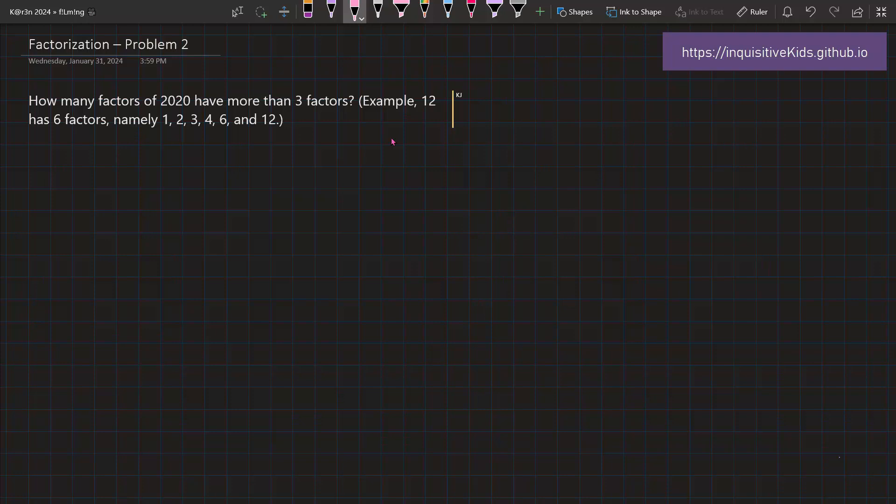For example, the number 12 has 6 factors, namely 1, 2, 3, 4, 6, and 12.